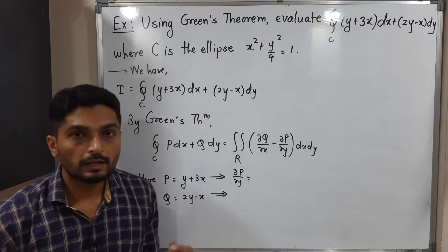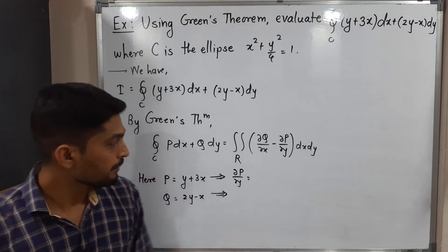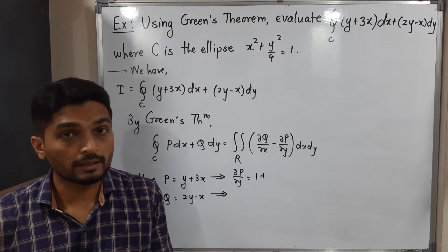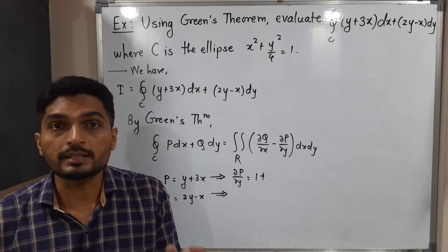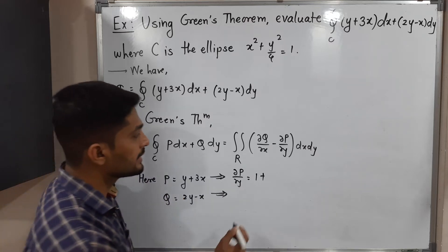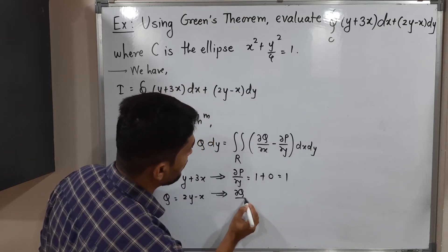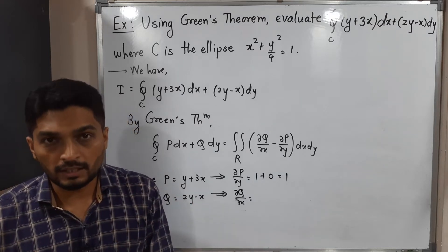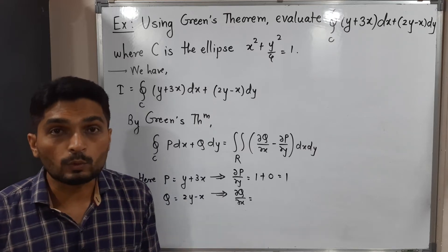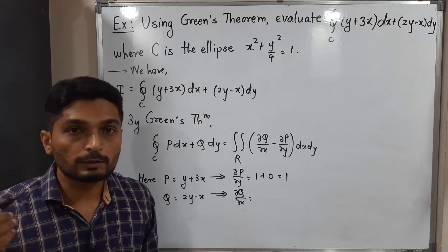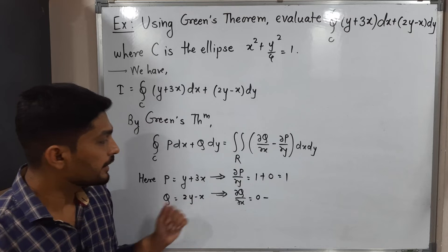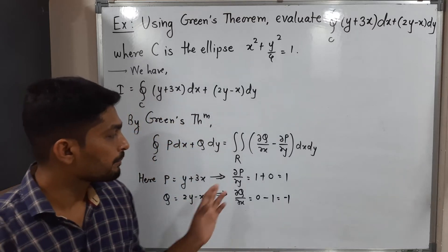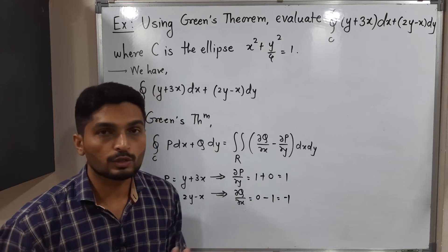For ∂P/∂y: the derivative of y is 1, and the derivative of 3x with respect to y is 0 since 3x is constant in y. So ∂P/∂y = 1. For ∂Q/∂x: the derivative of 2y with respect to x is 0, and the derivative of −x with respect to x is −1. So ∂Q/∂x = −1.